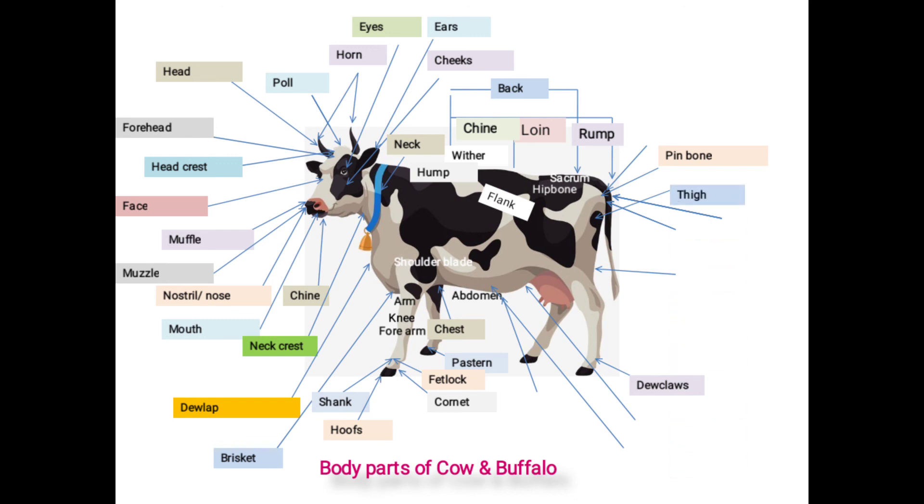Next one is thigh: thick and fleshy portion of hind legs in between rump and hock bone called as thigh, and generally used for putting identification marks in branding method.